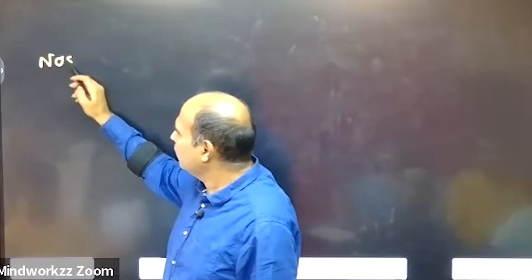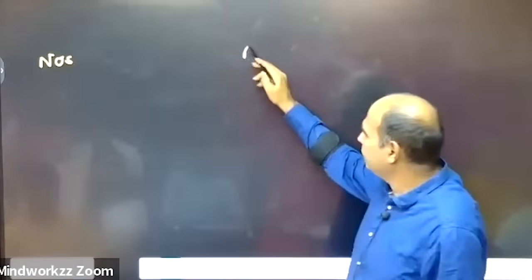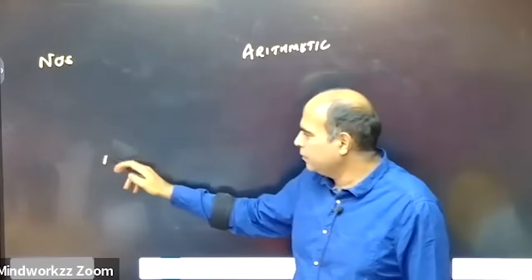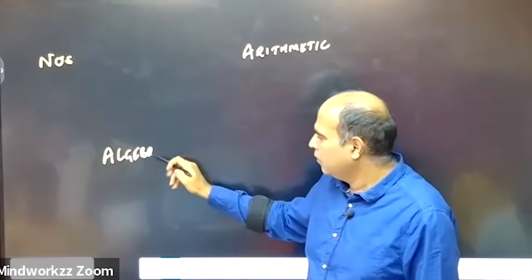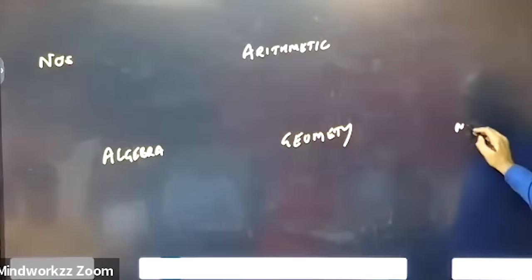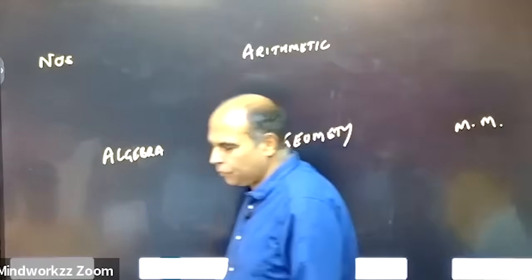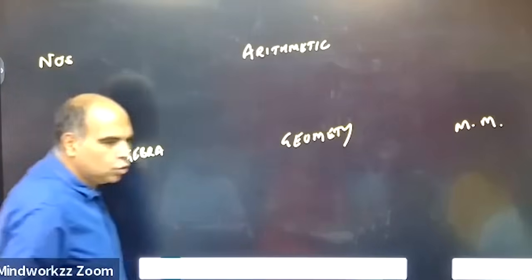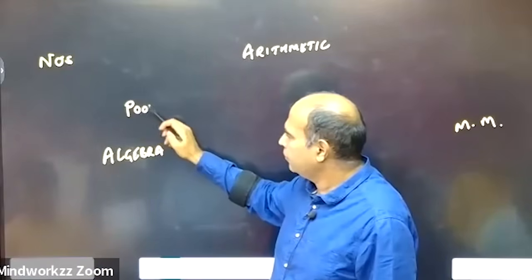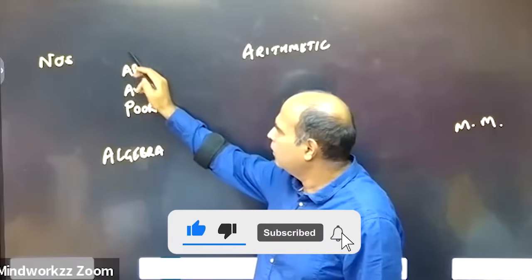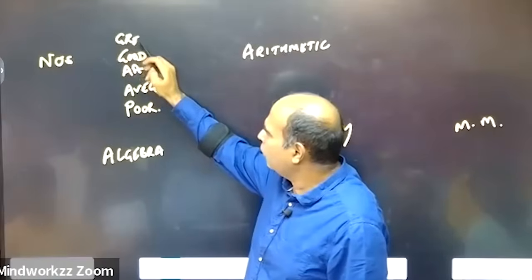The big parts are numbers, arithmetic, algebra, geometry, and modern maths. These five broad areas are what you need to turn around. In each area, you might be a poor solver, an average solver, an above average solver, a good solver, or a great solver of those topics.